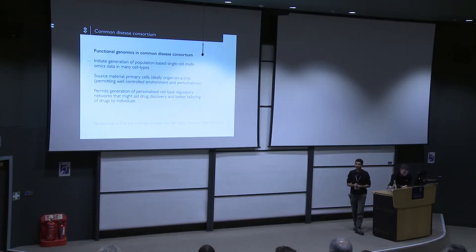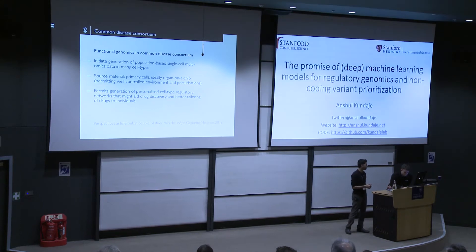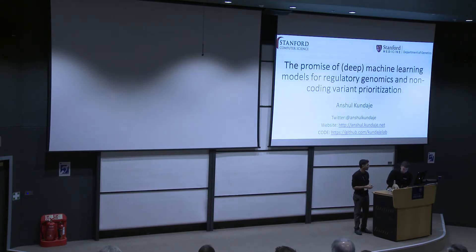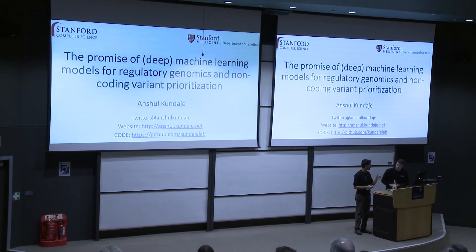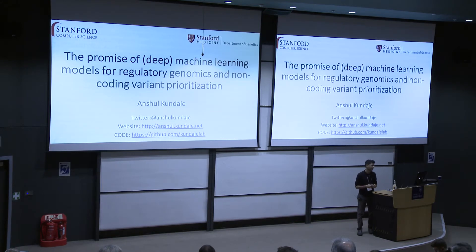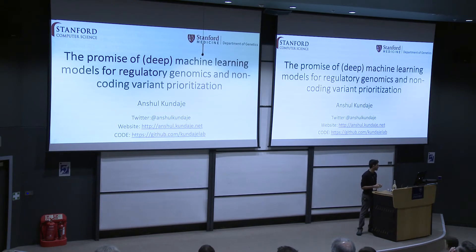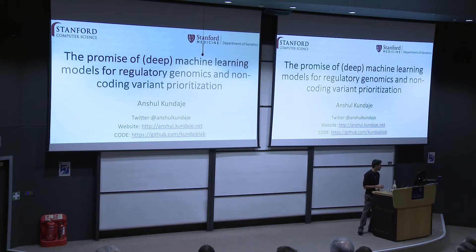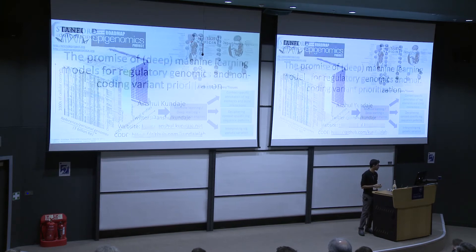I want to start by thanking the organizers for this opportunity — it's been a really eye-opening and great meeting. I'm going to give a slightly different point of view. We've discussed a lot of interesting statistical genetics approaches, and I think there is a lot of potential for machine learning approaches, particularly deep learning, for leveraging large-scale data sets for non-coding variant prioritization. My talk is going to be slightly critical, but also focusing on the road forward and how we can improve these models.